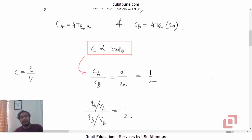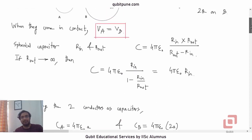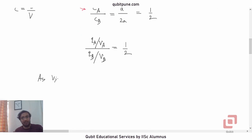But VA and VB are same because they came in contact. As VA is equal to VB during contact, QA upon QB will be equal to half.